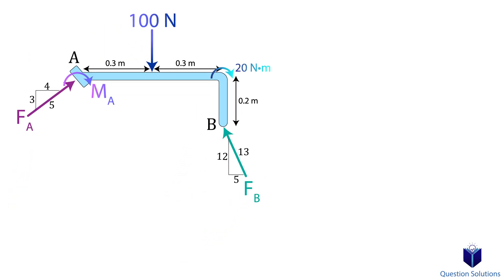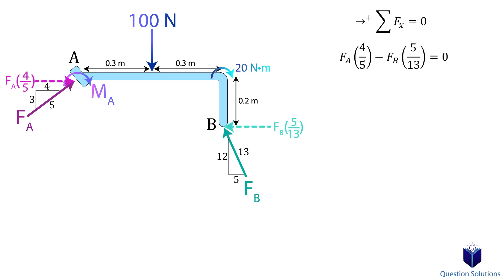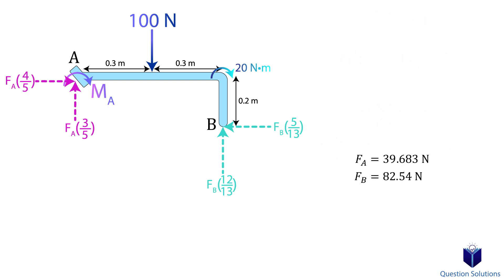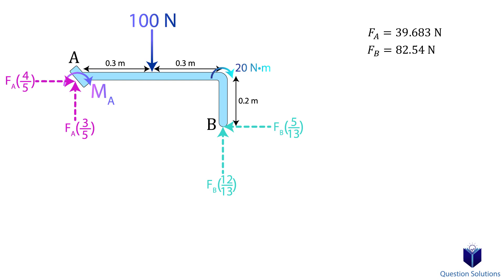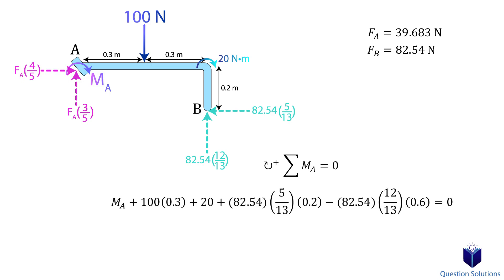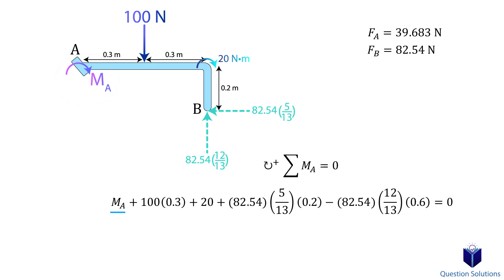Now we write our equations of equilibrium. Let's start with an equation for the x-axis forces, using the x-components of the forces. Next, an equation for the y-axis forces. From these two equations, we can solve for forces FA and FB. Now we still need to figure out the moment created about the smooth collar. For that, we write a moment equation about point A, assuming clockwise to be positive. The reactions at A are ignored because their line of action goes through point A. However, we still need to consider the moment about point A — that moment must be included in our equation.